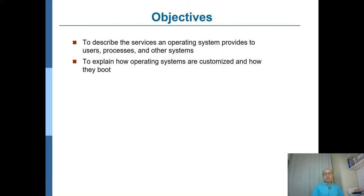The objectives of this chapter are to describe the system services provided to users. It is possible that instead of a human user, you also have a program, or alternatively a cyber-physical system. For example, in the case of Industry 4.0 or factory automation, the user may not be a human being or a program, but a machine in the factory. We will also talk about how a computer system is installed, customized, and how it really boots.